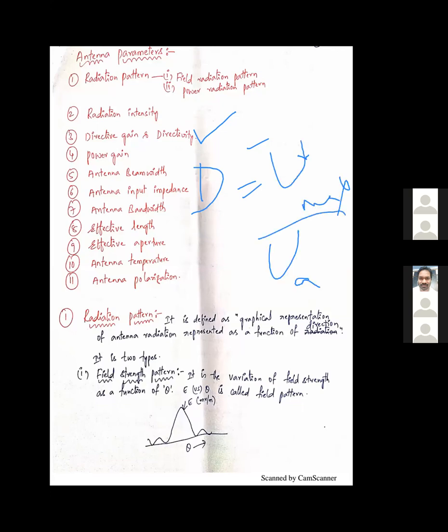Directivity is defined as the ratio of maximum radiation intensity to average radiation intensity: D = U_max / U_average. Maximum directivity is defined as directivity gain.